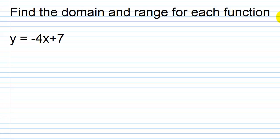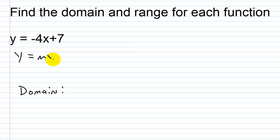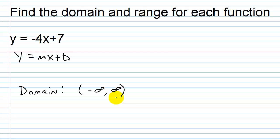With something simple like Y equals negative 4X plus 7, what can we plug in for X? What would the domain be? This is just a line — Y equals MX plus B — with a slope of negative 4 and a Y-intercept of 0 comma 7. There's no restriction on what I can plug in for X, so the domain is the set of all real numbers, written in interval notation as negative infinity to infinity.